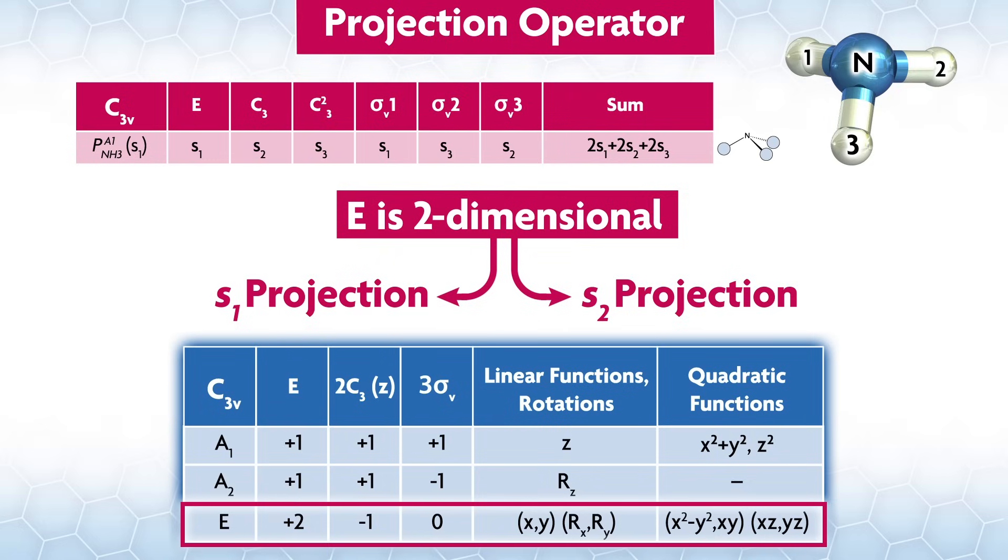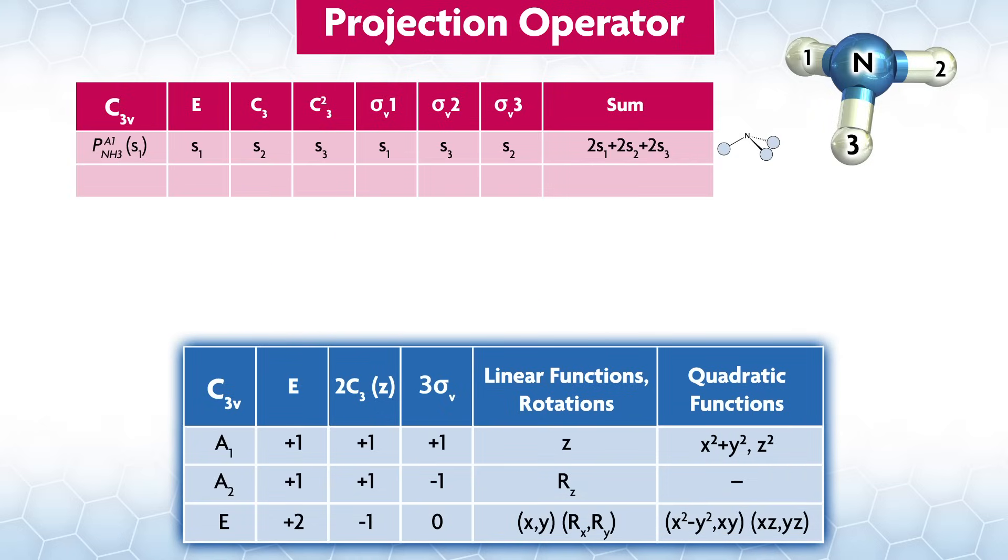Now we need to do the same thing for the e irreducible representation. The first thing to realize is that e is two-dimensional, so it has two things in it. Our projection procedure gives us one answer at a time, so we need to do two different projections. In order to get two different answers, we will project on two different parts of our basis. We'll do the projection on s1 first and then apply the procedure on s2. We've already seen what the operations in C3v do to our s1 basis under a1, which just multiplies them by plus one. In other words, leaves them unchanged. For e, we can take that table and multiply by the character for each operation under e.